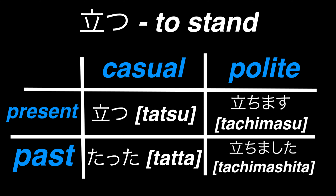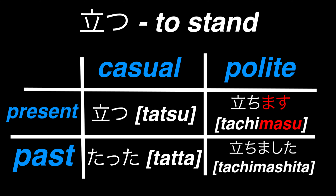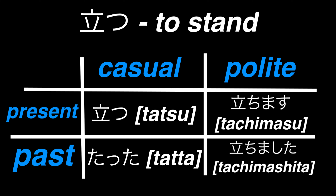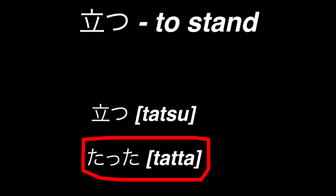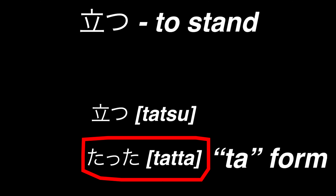If we conjugate the verb tatsu, we'll get a table that looks something like this. To make the polite form past tense, we turn masu into mashita, going from tachimasu to tachimashita. As for the casual conjugation, it turns from tatsu to tatta. This is what's called the verb's ta form. Verbs can have a lot of different forms, but I'll talk more in depth about these in a bit.